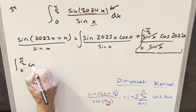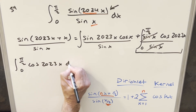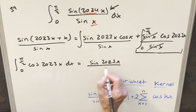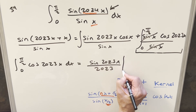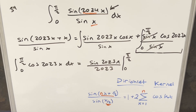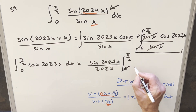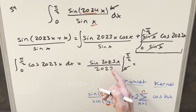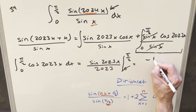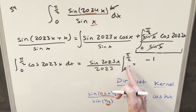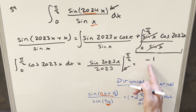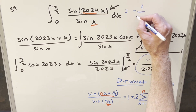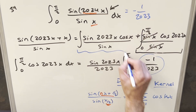We're going to be integrating from 0 to π/2 of cos(2023x) dx. Integrating that, we get sin(2023x) with a 1/2023 in the denominator, evaluated from 0 to π/2. Evaluating at zero is just zero. When you plug in π/2, sine of 2023π/2 is actually minus one — that's the same as the three π/2 value. So we get minus one over 2023. This will be part of our solution that we come back to later.